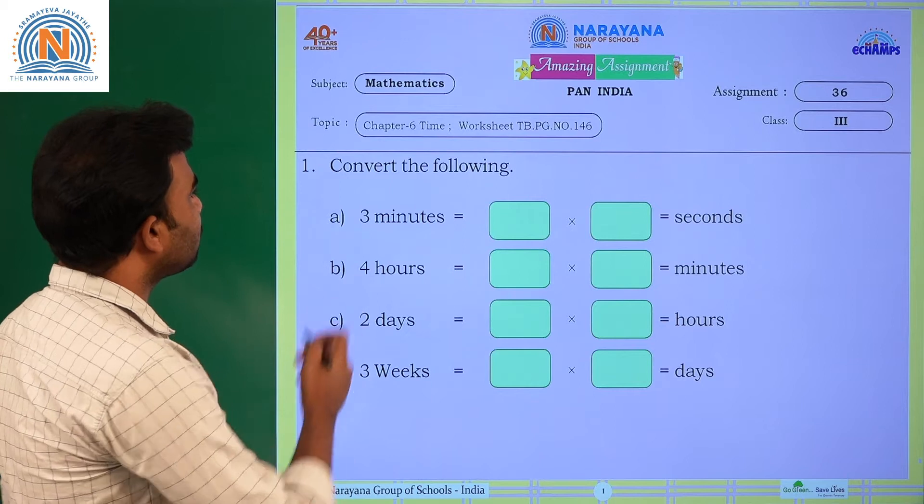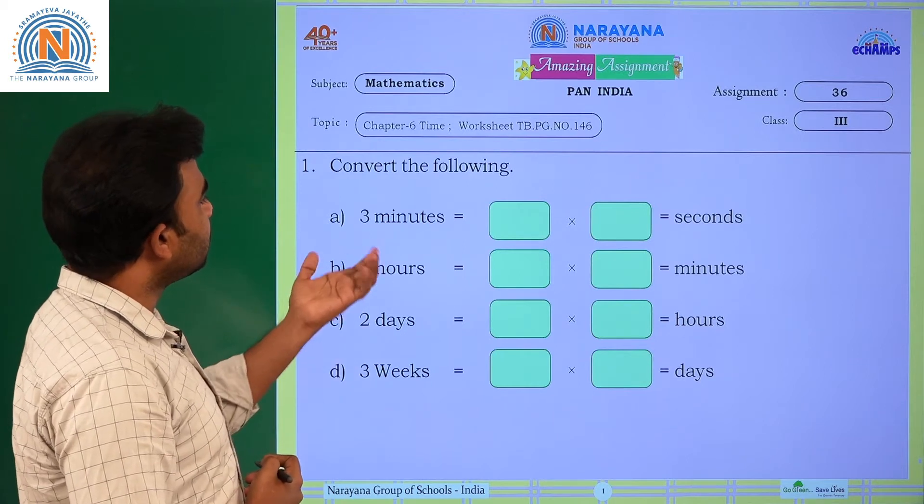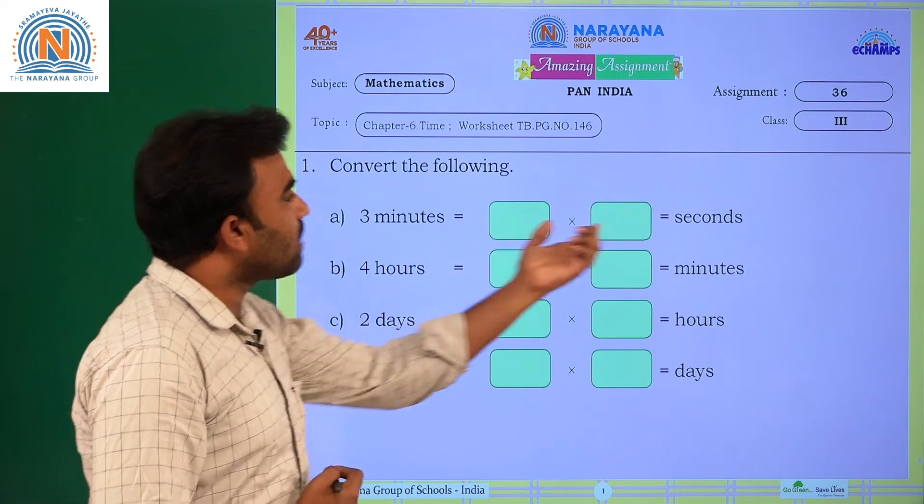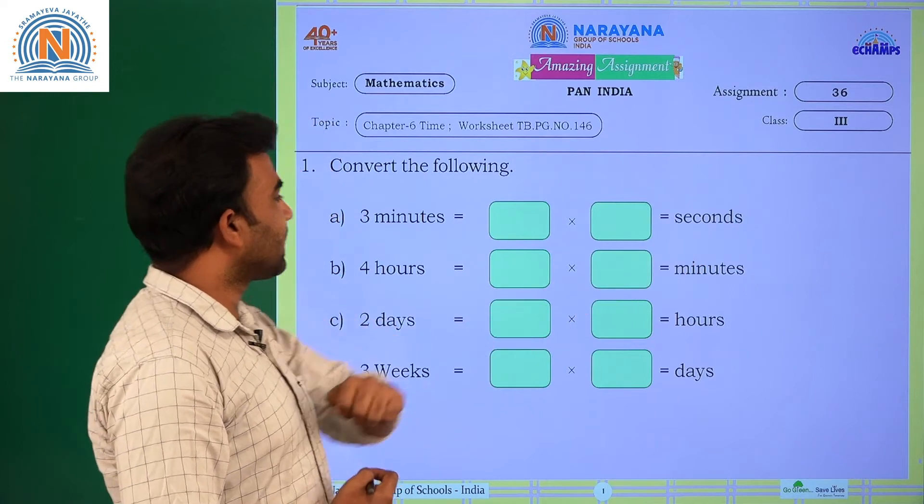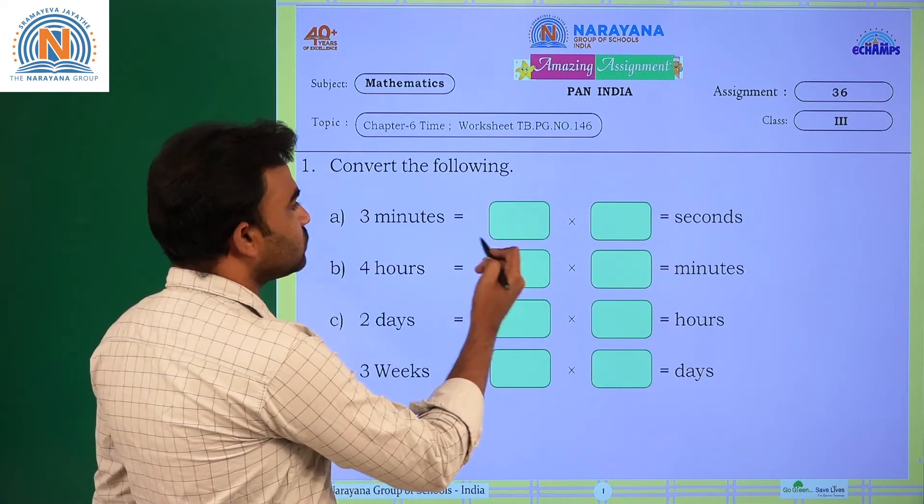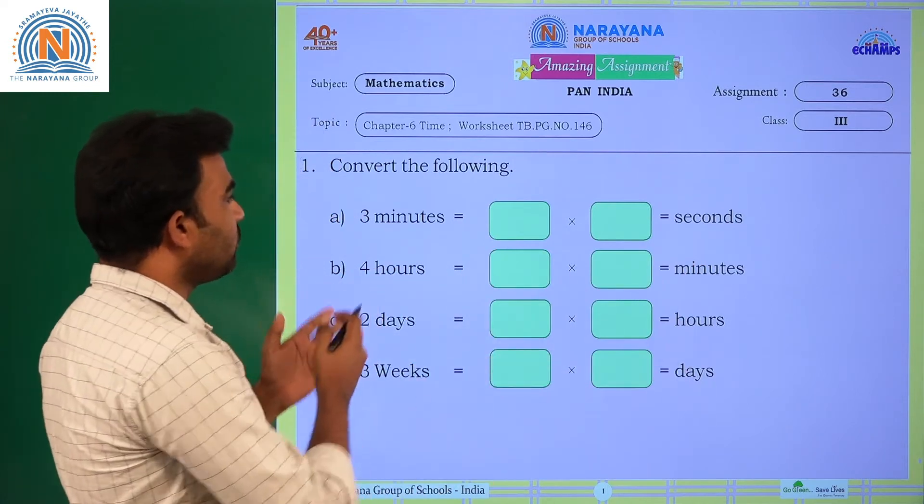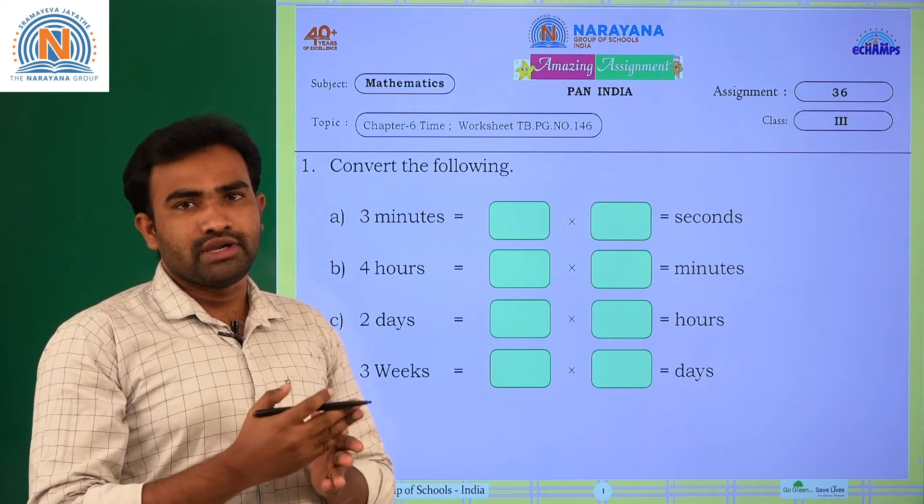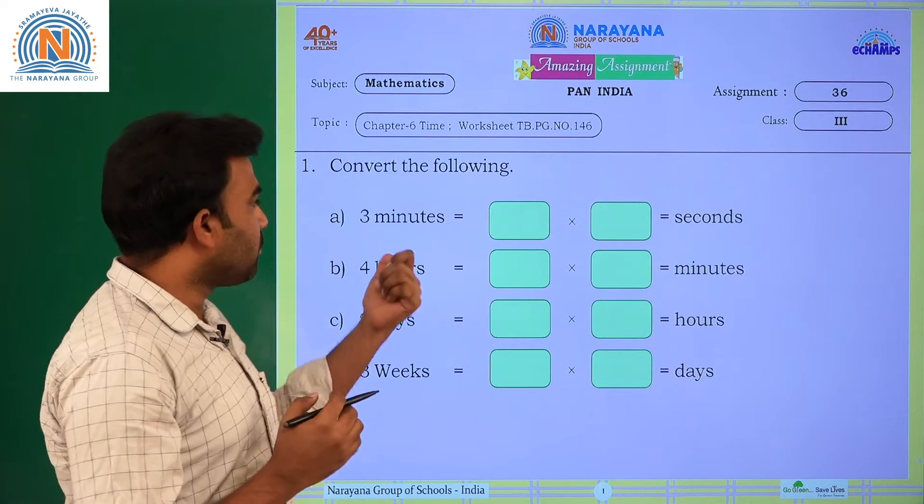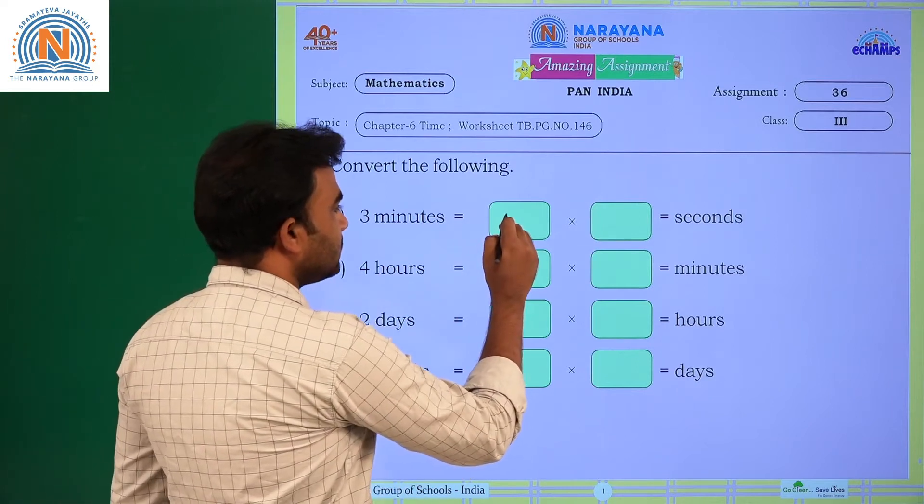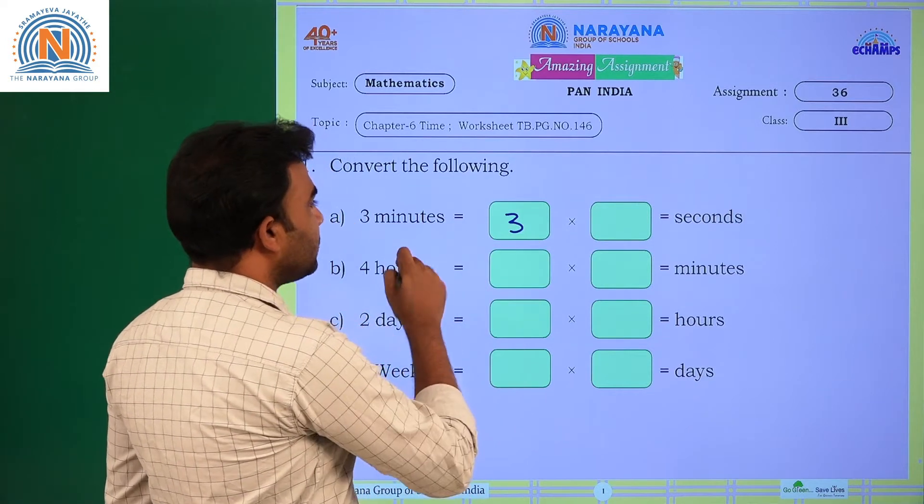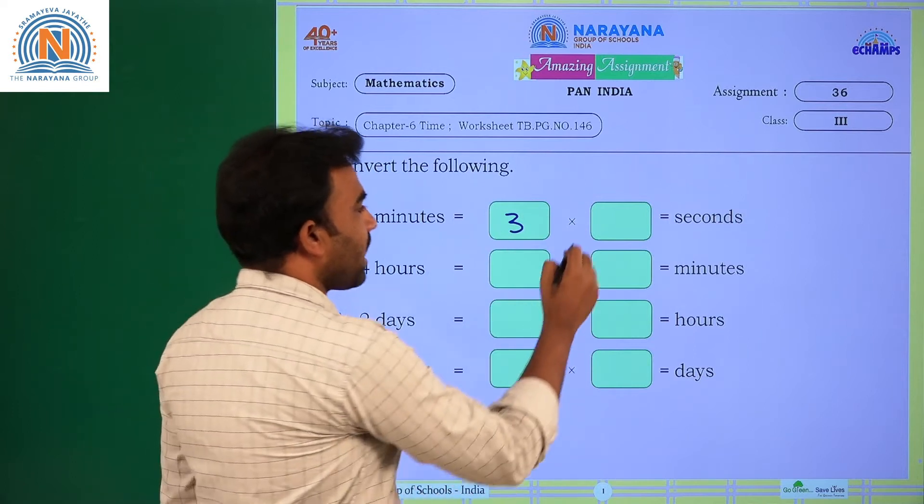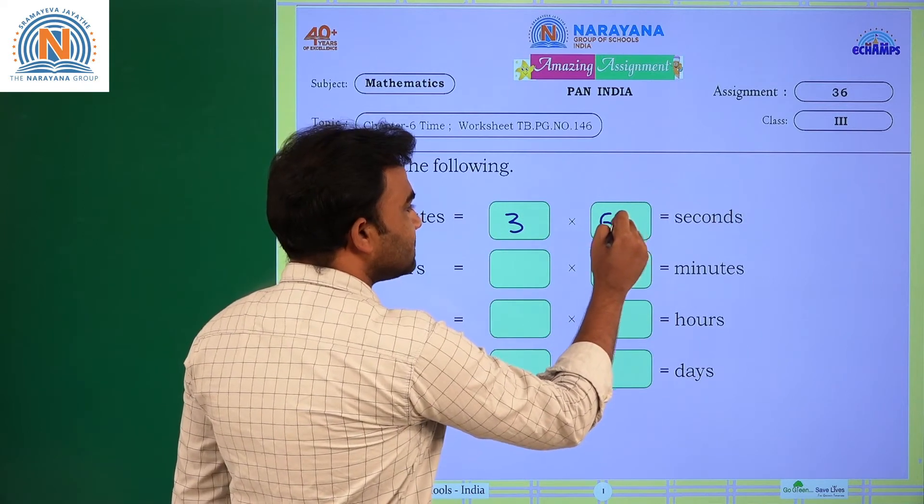First problem: convert the following. See here minutes are given and we have to convert it into seconds. Three minutes equals dash into dash. To convert minutes into seconds, we have to multiply it with 60. So, number of minutes are 3, and to convert the minutes into seconds, we have to multiply it with 60.